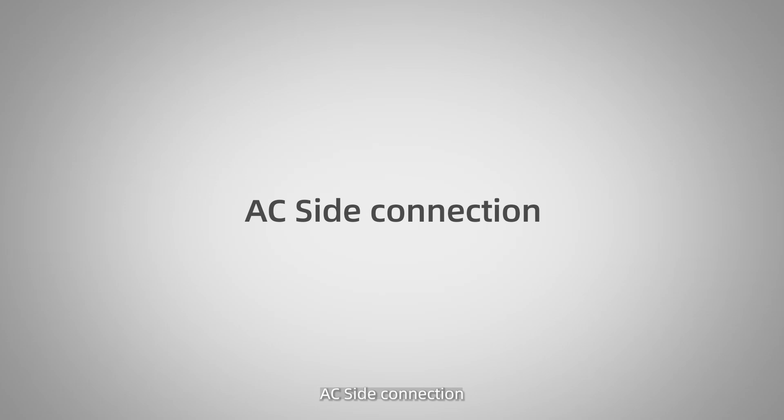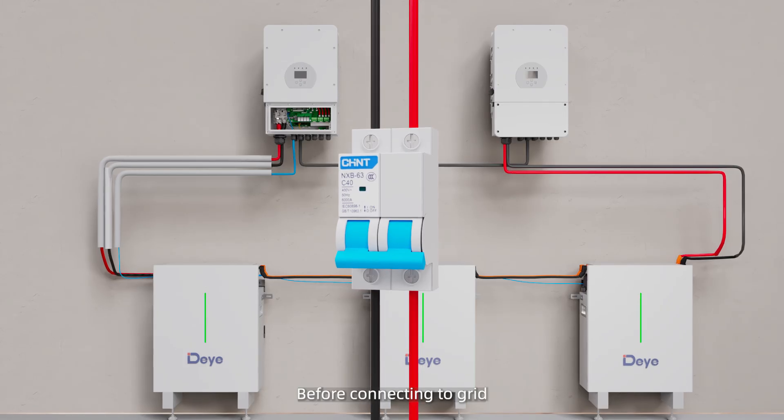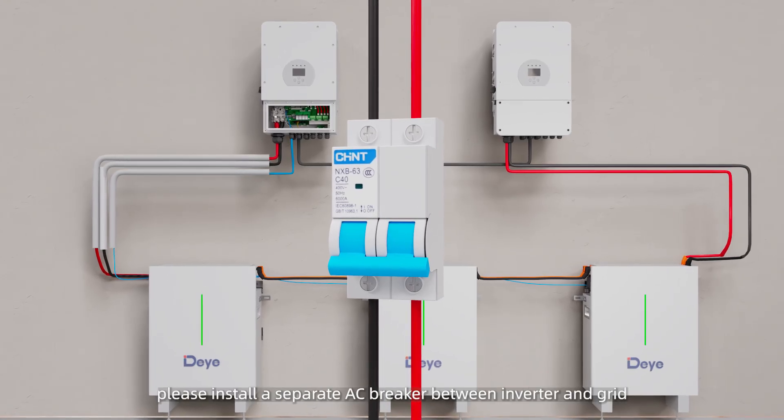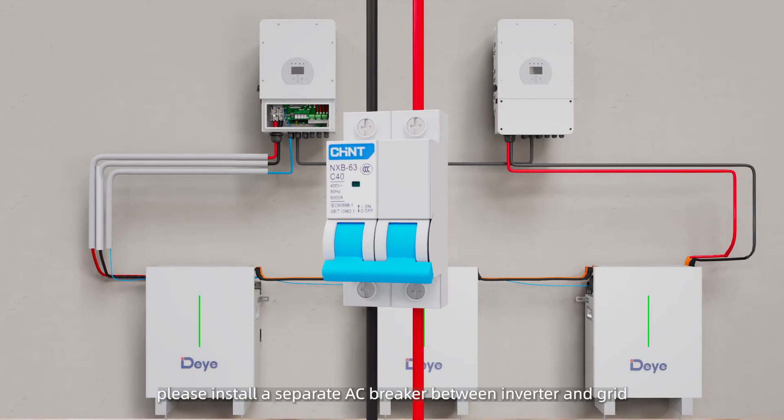AC side connection. Before connecting to grid, please install a separate AC breaker between inverter and grid. It is also recommended to install an AC breaker between backup load and inverter.